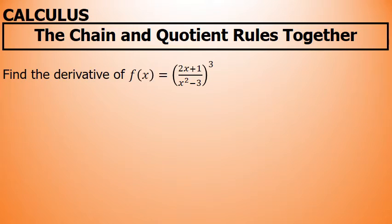Find the derivative of f of x equals the quantity of 2x plus 1 over x squared minus 3, to the third power.